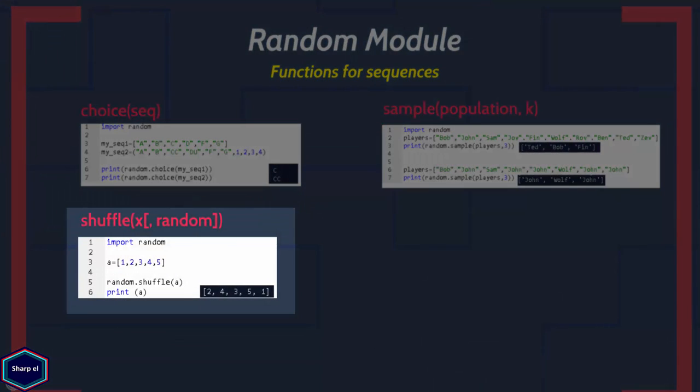The shuffle() function shuffles a sequence. It takes two arguments: a sequence and a function object, where the second argument is optional. By default it uses the random() function with uniform distribution.